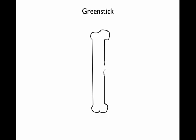A greenstick fracture — if you remember the definition of a fracture, it can involve loss of cortex on part of a bone. In this case, we've lost the cortex on one side of the bone but not on the other. This commonly occurs in children, where the bones are much more flexible, so you can get a crack or disruption of the cortex on one side but not the other. These can be difficult to spot.